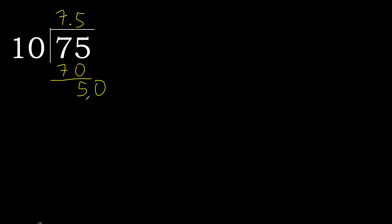50 is not greater. Subtract: 0. Therefore finished. 75 divided by 10 is 7.5.